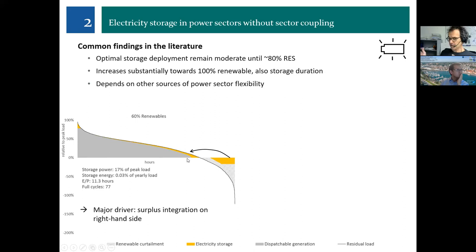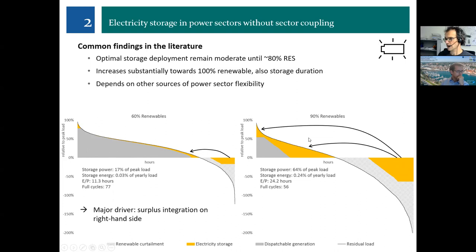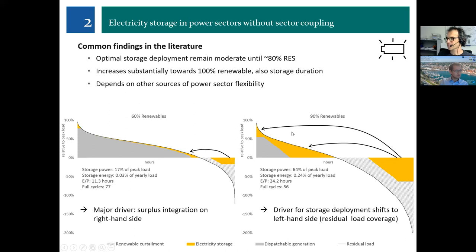In the 60 percent renewable world, making good use of a part of the renewable surpluses on the right-hand side of the residual load duration curve drives storage use. This changes at 90 percent renewables: the residual load duration curve shifts down, surplus generation massively increases, and storage use is now much less driven by using surpluses and much more by covering residual load. With a binding 90 percent target, the driver for storage really shifts from the right-hand side of the curve to the left-hand side.